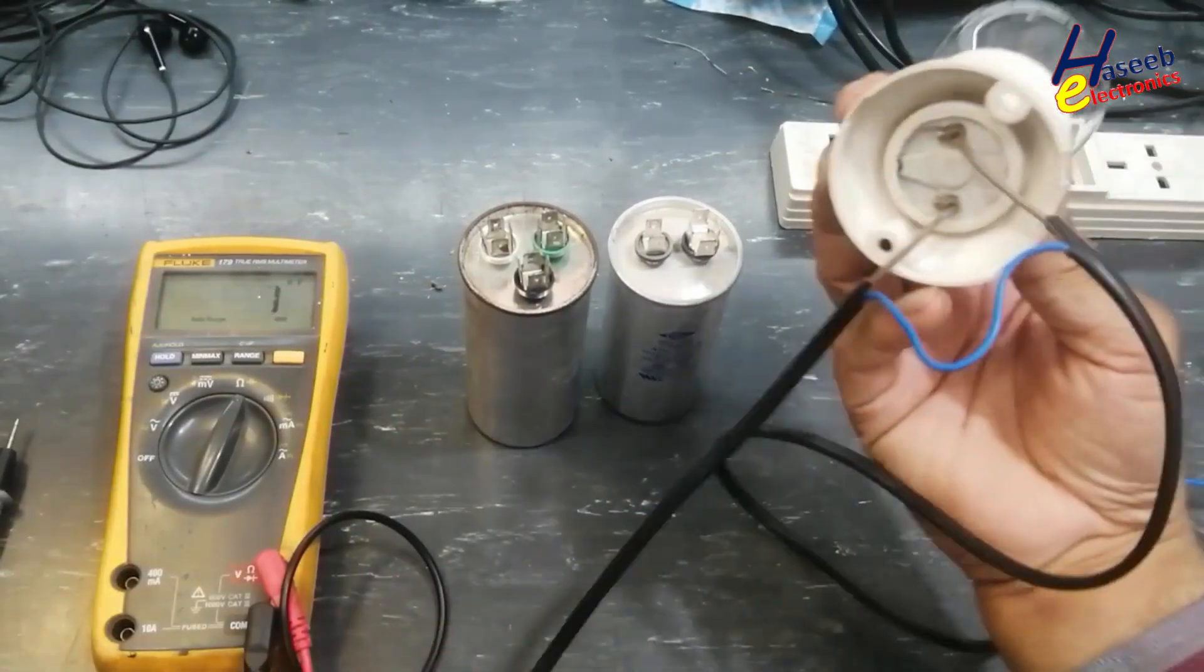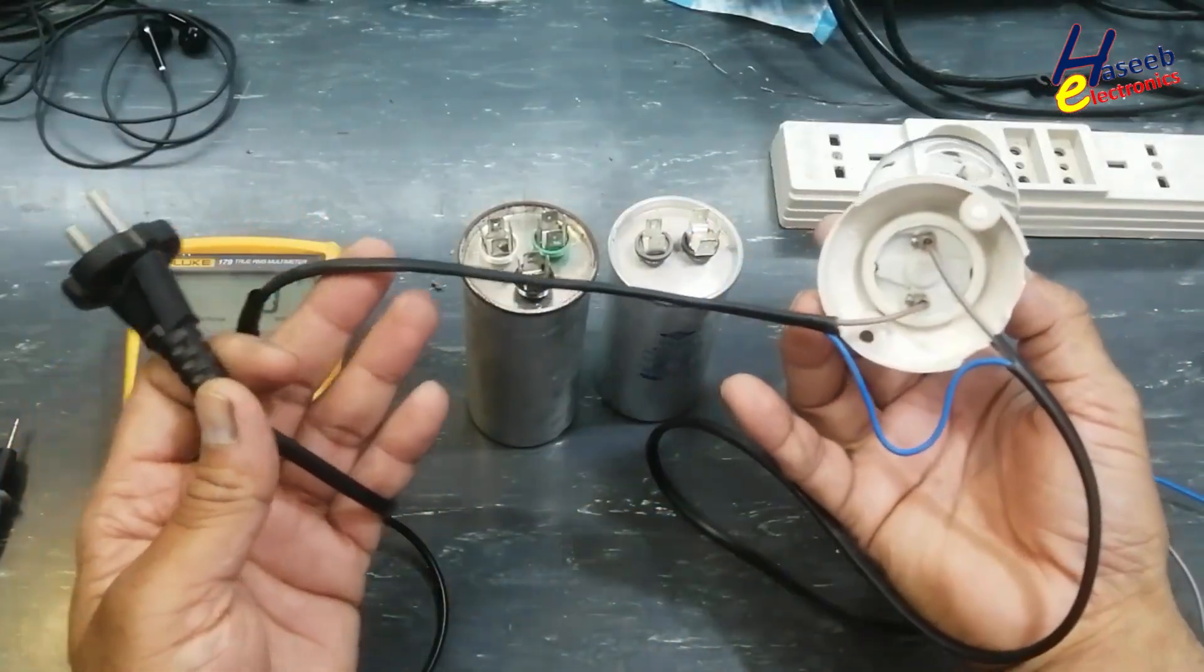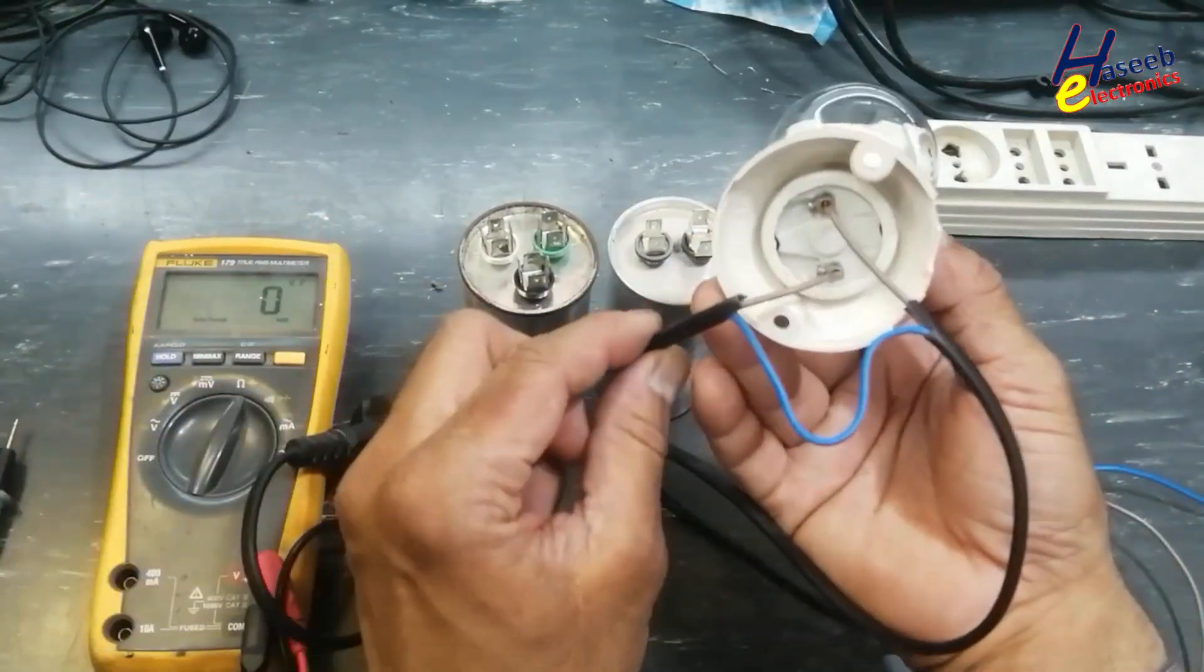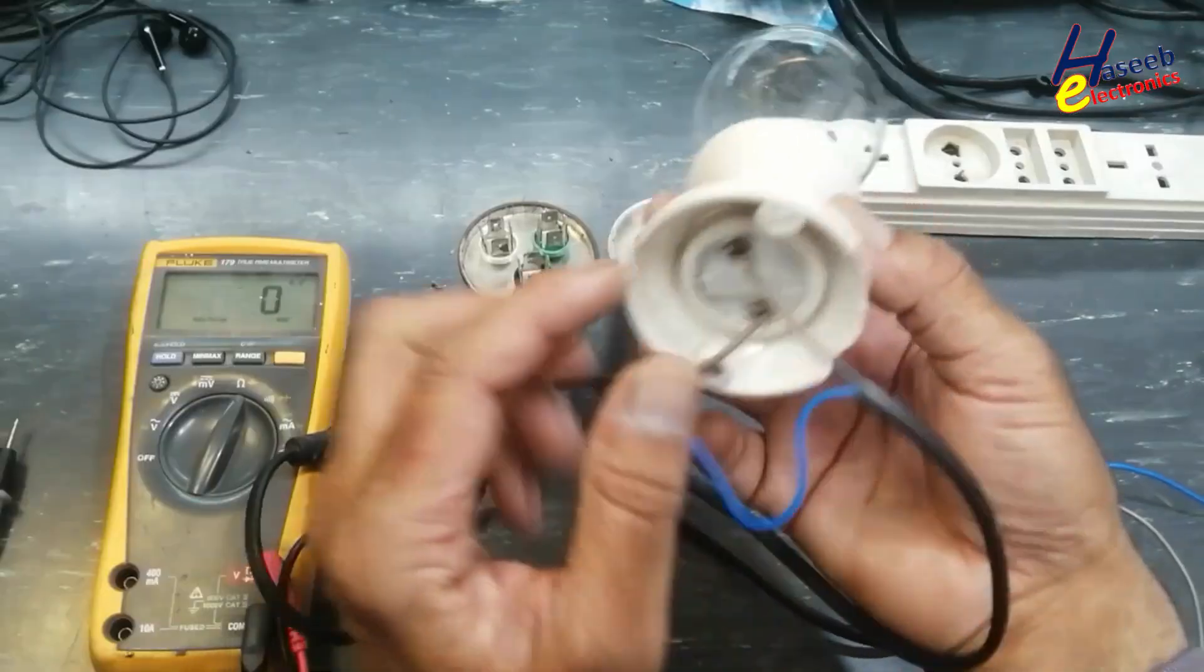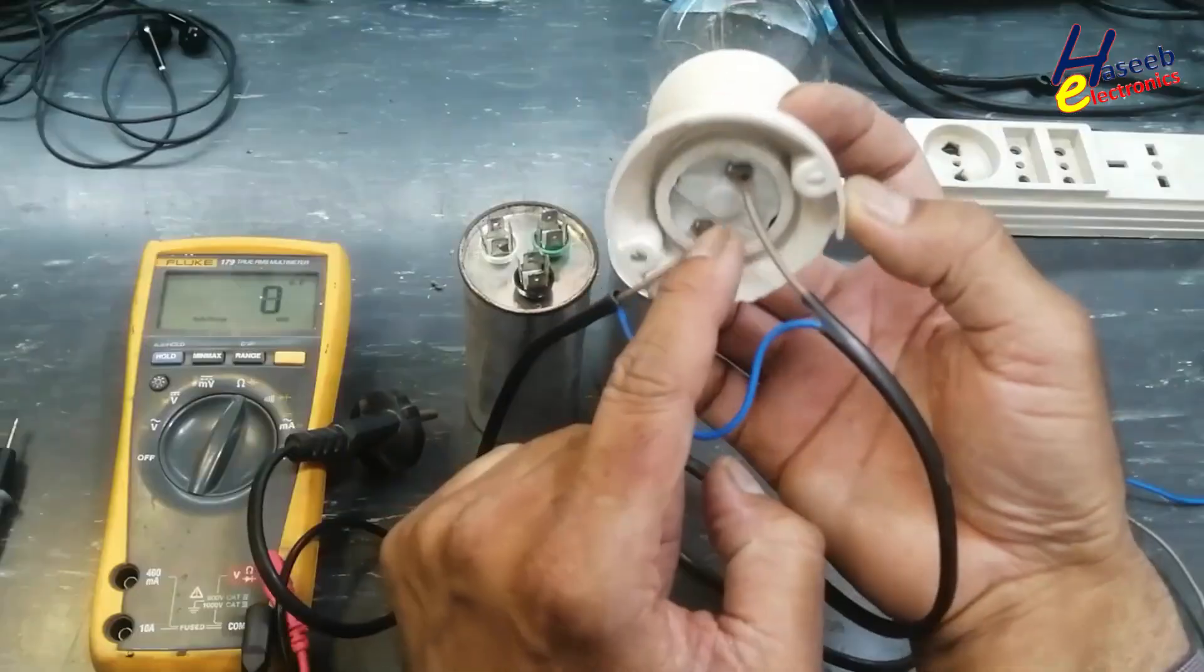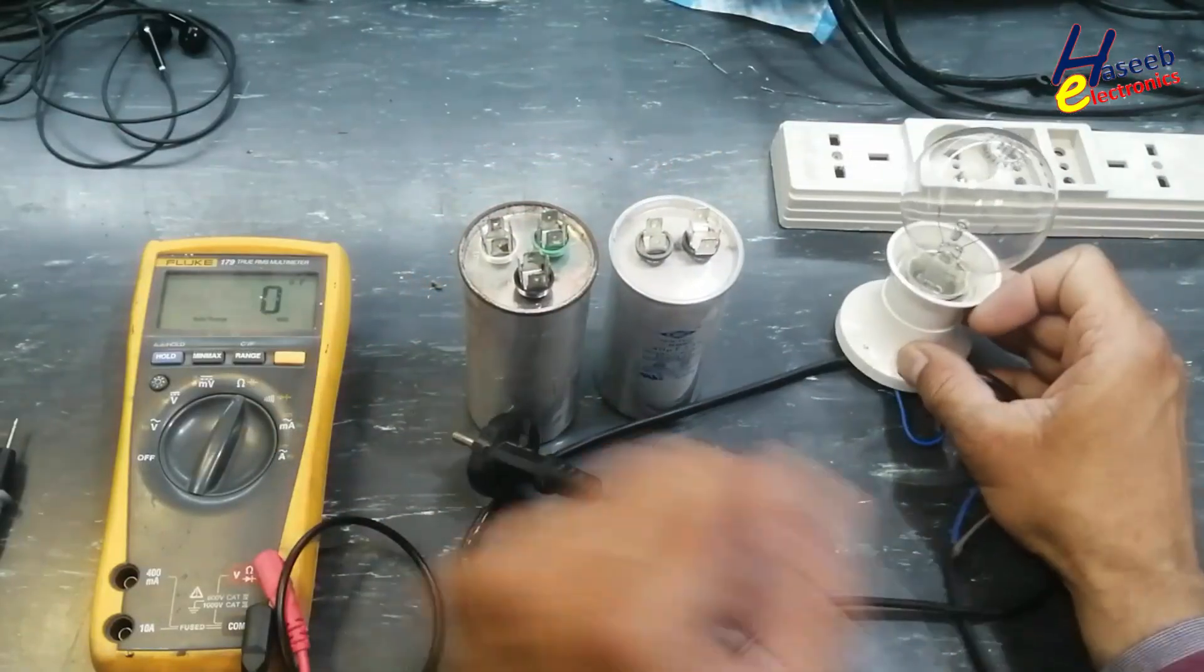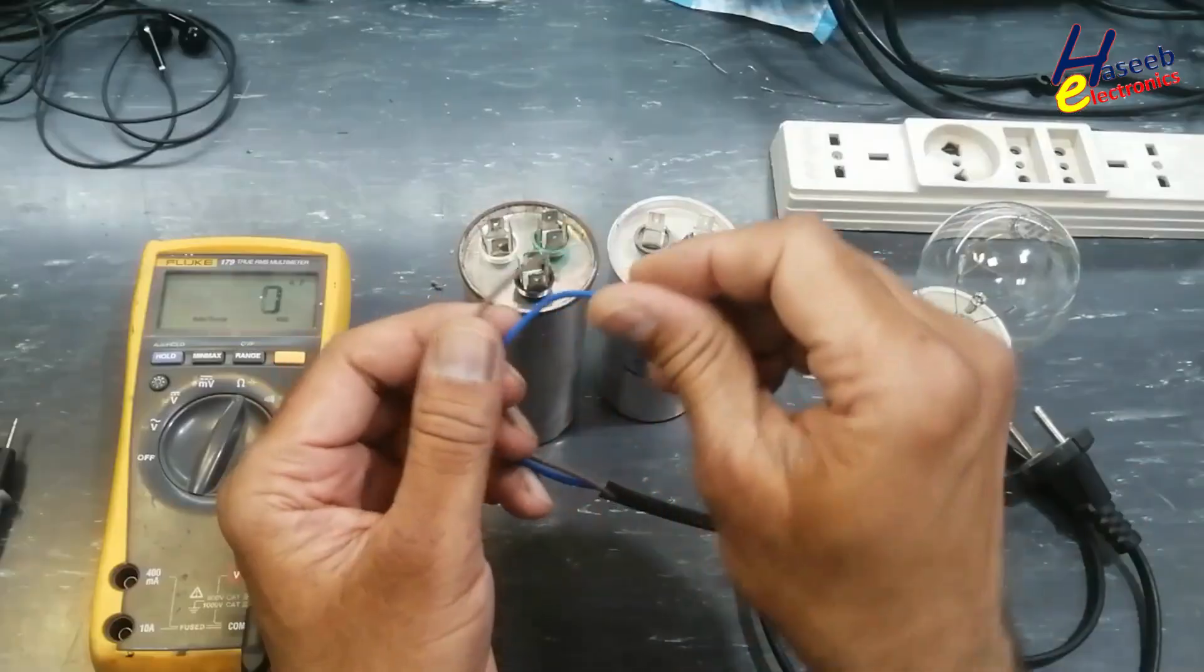Now I will use series lamp. You can make series lamp very easily. Take a two wire cable. One wire will reach directly to the test point. Second wire disconnected, entered in this tungsten lamp. Second side out as a test point. We will not touch these points.